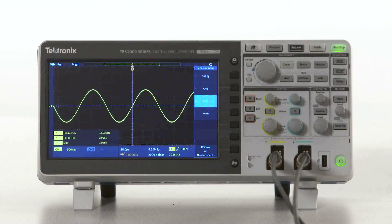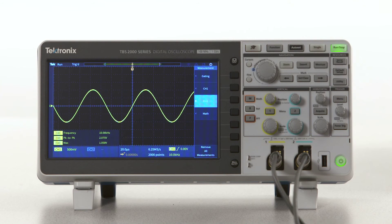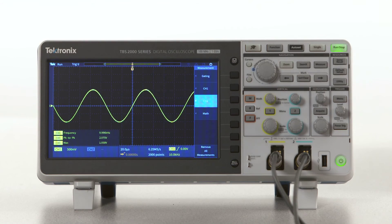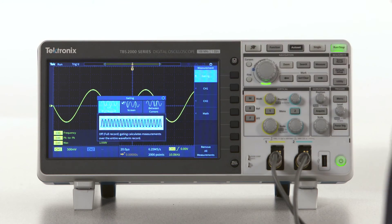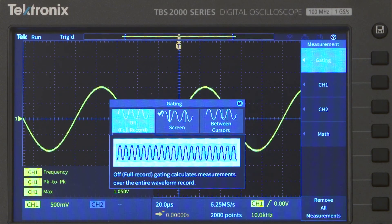On this scope, the automated measurement functions give you the option to define the portion of the waveform used to calculate the measurement. This is called measurement gating. The default option is the entire waveform, or full record length. This means any measurement you select would be applied to the entire waveform data.